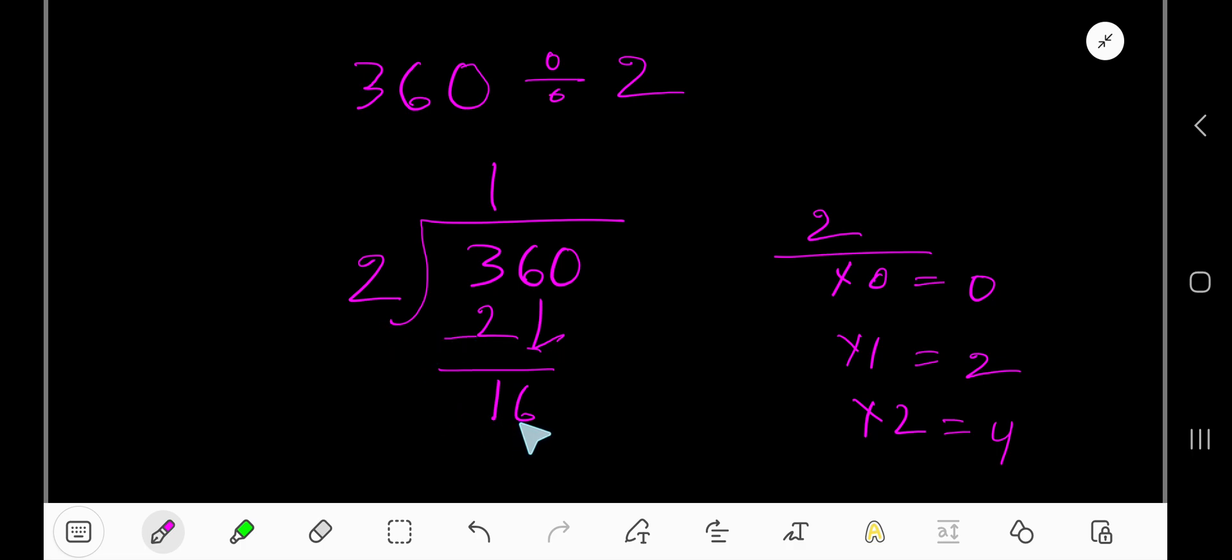2 goes into 16 how many times? 8 times. 8 times 2, that is 16. If you subtract, you will get 0.